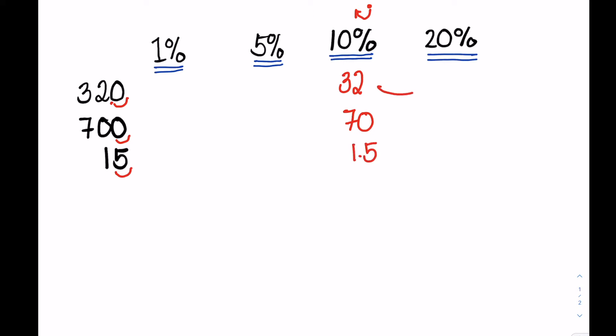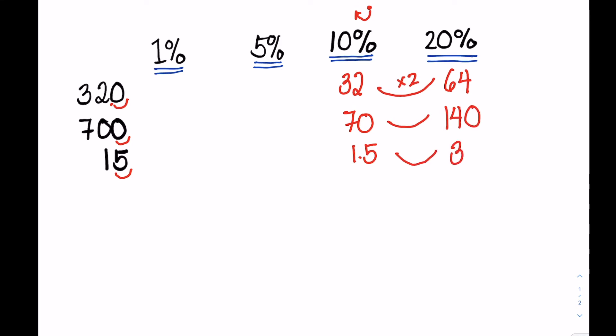To get the 20%, we multiply the 32, the 10%, by 2, so we have 64. We multiply 70, so that's 140. So the 20% of 15 is 3, that's 1.5 times 2.